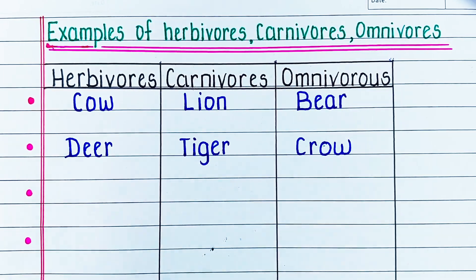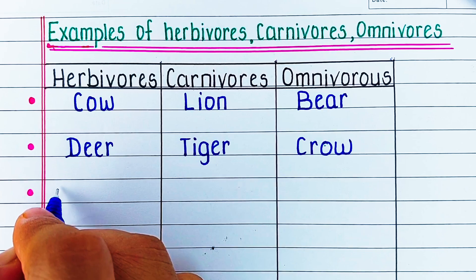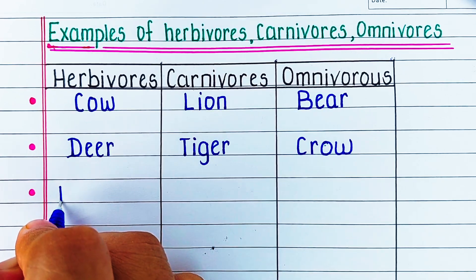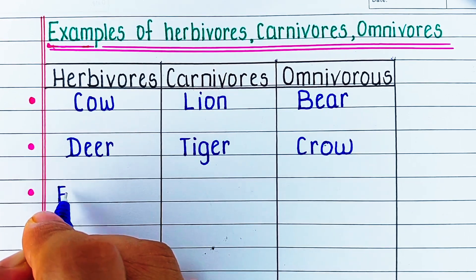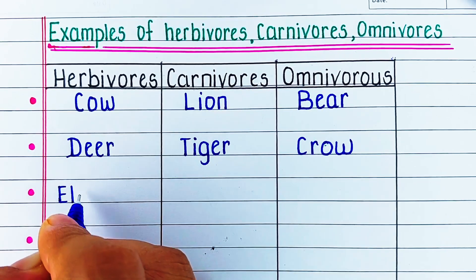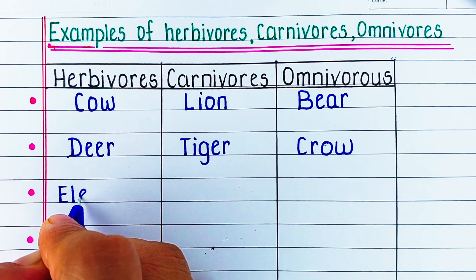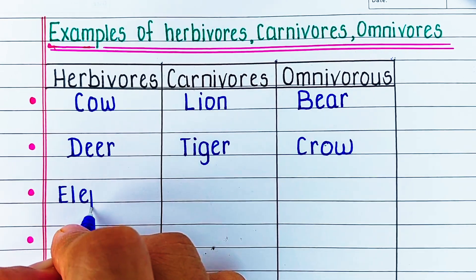The first herbivore in our list is cow. The first carnivore in our list is lion. And the first omnivore in our list is bear.